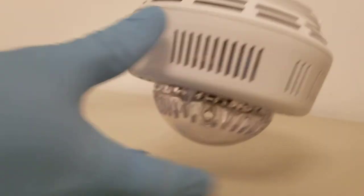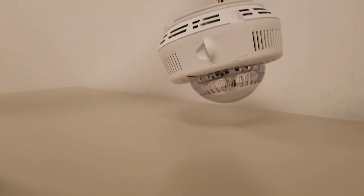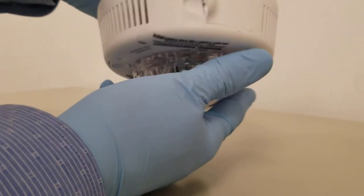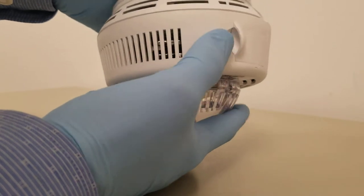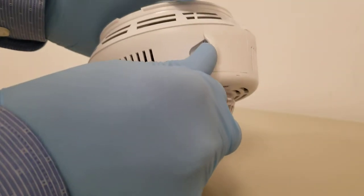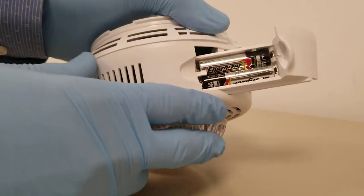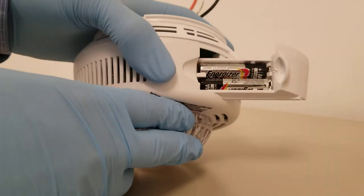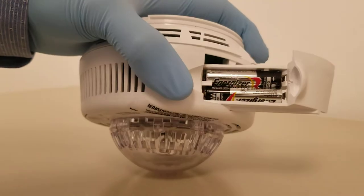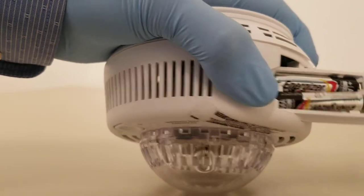When you detach it from the ceiling, it should look like this. Look here - there's a tray for the batteries. Push it. Okay, two triple-A batteries. You can remove the batteries easily by hand, or you may need something like a screwdriver.